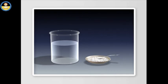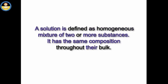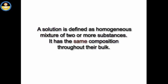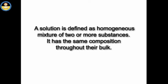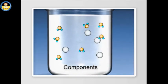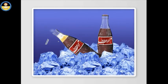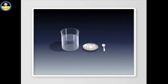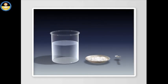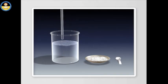In a true solution like sugar solution, the dissolved particles are extremely small and easily pass through filter paper pores. A solution is defined as a homogeneous mixture of two or more substances with the same composition throughout. The substances present in it are called components, which can exist as solid, liquid, or gas. The substance that dissolves is the solute, and the substance it dissolves in is the solvent. If the solvent is water, the solution is called an aqueous solution.